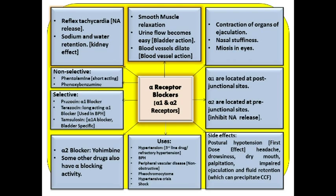Phenoxybenzamine is a non-selective alpha blocker used in the management of pheochromocytoma, whether medically managed or during surgery, because handling the tumor releases a lot of catecholamines causing high blood pressure. You can give phenoxybenzamine to control it, making it the drug of choice for individuals with pheochromocytoma to manage hypertension.